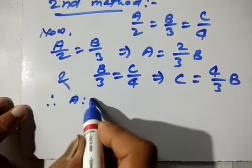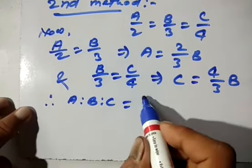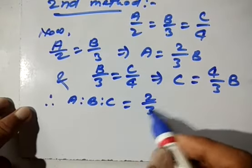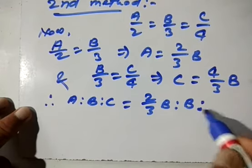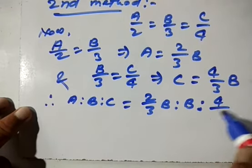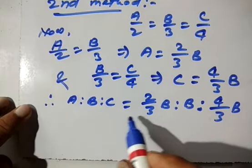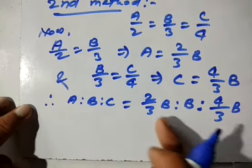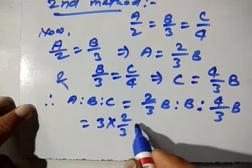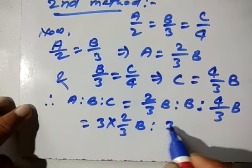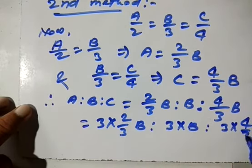Now, for the second method: a is to b is to c. We find the value of a and c in terms of b. From a/2 = b/3, we get a = 2/3 × b. From b/3 = c/4, we get c = 4/3 × b. Now putting the values: value of a is 2/3 × b, then b, then value of c is 4/3 × b. Multiplying these terms by 3 — the LCM of the denominators.